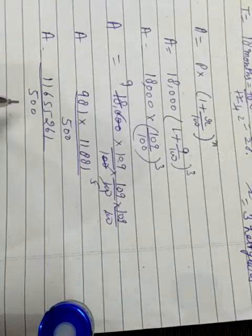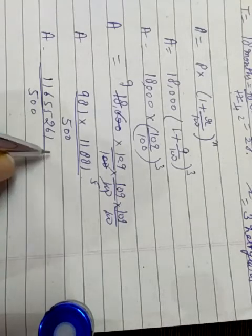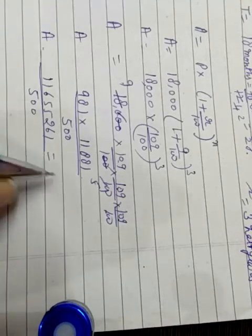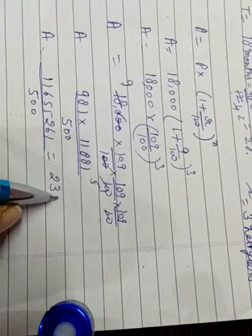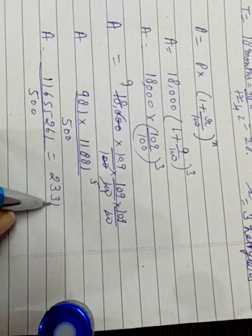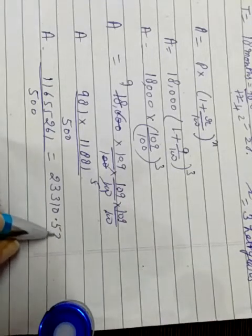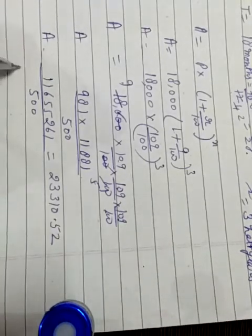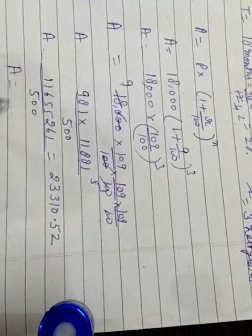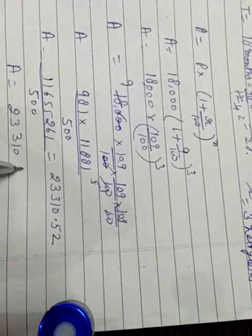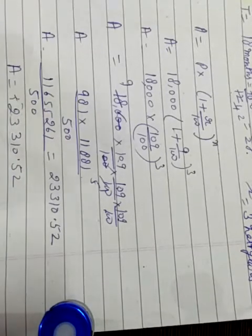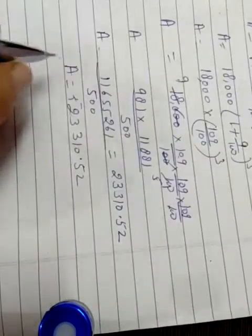Now dividing 11,655,261 by 500, we get 23,310.52. So amount is equal to rupees 23,310.52.